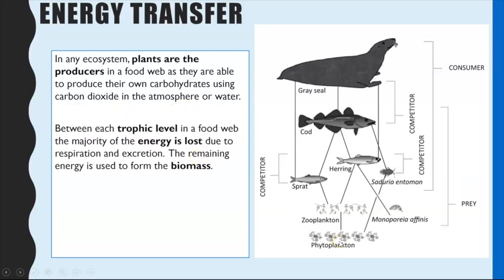Between each trophic level — that is the name for each stage in a food chain — a lot of energy is lost, and again that is something you covered at GCSE. That energy could be lost due to respiration, so a lot of energy is lost as heat energy in respiration, and also through excretion in faeces, urine, and exhaling carbon dioxide. Whatever energy is remaining is available to form biomass, and that's the key concept here — biomass — because that is what is available to be passed on to the next trophic level.